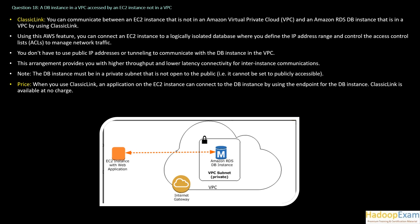Using this AWS feature, you can connect an EC2 instance to a logically isolated database where you define the IP address range and control the access control list to manage network traffic. Classic Link is a feature to support infrastructure where instances are outside the EC2 VPC. You don't have to use public IP addresses or tunneling to communicate with the DB instance in the VPC — no VPN network is required.